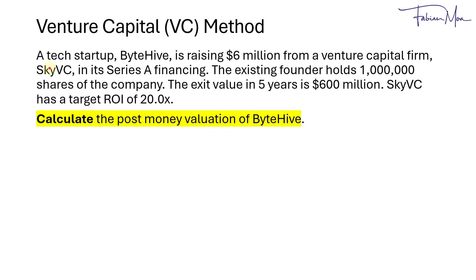In this example, a tech startup, ByteHive, is raising $6 million from a VC firm called SkyVC in its Series A financing. Their existing founder holds 1 million shares of the company. The exit value in 5 years is $600 million. SkyVC has a target ROI of 20 times.